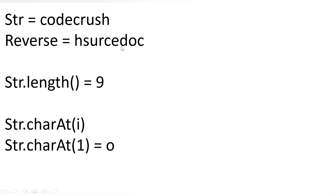Before implementing the logic to reverse a string, you need to understand two important methods of string. The first one is length(). If you have a string, you can call str.length() to get the number of characters — the length of that particular string. Here we have nine characters: one, two, three, four, five, six, seven, eight, nine — so the output is nine.